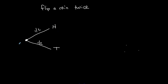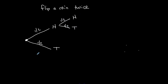If I flip the first time and get heads, then on the second flip I can get either heads or tails — one-half chance of each. If I flip the first time and get tails, on the second flip I can again get either heads or tails, again one-half chance of each. These are my first and second events branching out in the tree diagram.